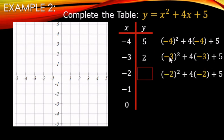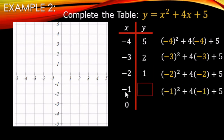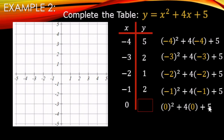For x = negative 2: negative 2 squared is positive 4, 4 times negative 2 is negative 8, plus 5. I'd go 4 plus 5 makes 9, minus 8 makes 1. For x = negative 1: negative 1 squared is positive 1, 4 times negative 1 is negative 4, plus 5. So 1 plus 5 is 6, minus 4 makes 2. And for x = 0: 0 plus 0 plus 5 makes 5. The table is now fully filled out.